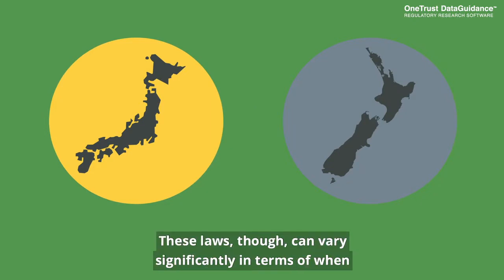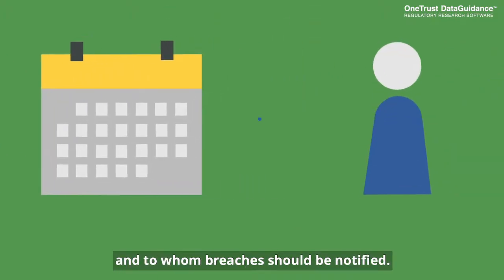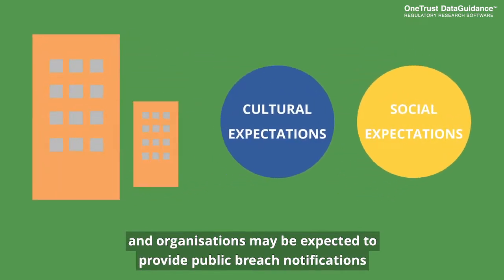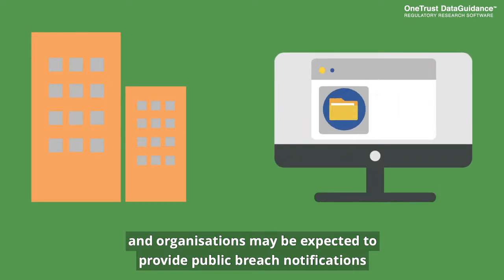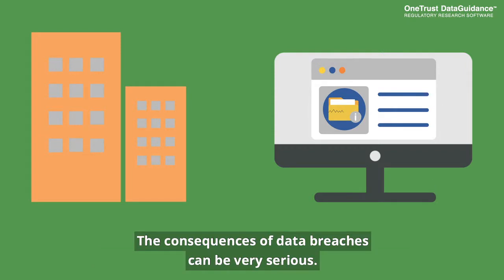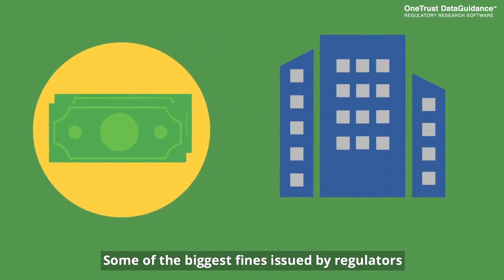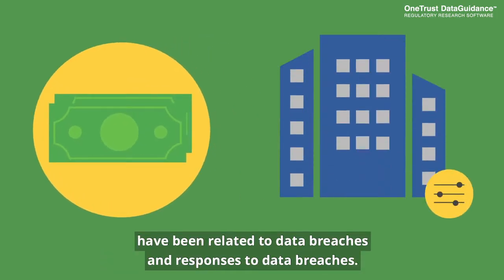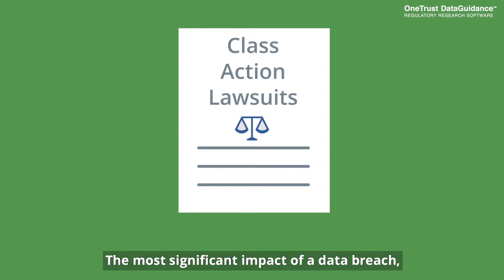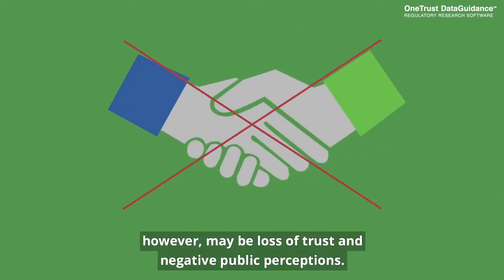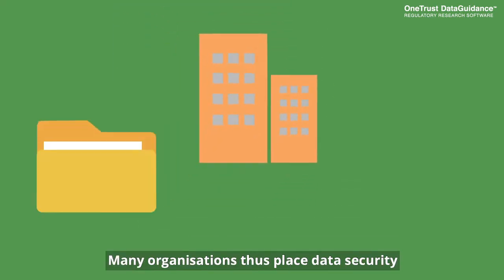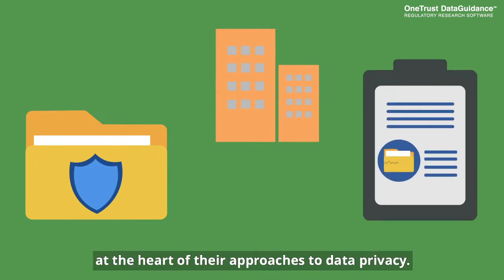These laws, though, can vary significantly in terms of when and to whom breaches should be notified. Cultural and social expectations can also play a role, and organizations may be expected to provide public breach notifications even when there is no legal obligation to do so. The consequences of data breaches can be very serious. Some of the biggest fines issued by regulators have been related to data breaches and responses to data breaches. There have also been class-action lawsuits following data breaches. The most significant impact of a data breach, however, may be the loss of trust and negative public perceptions. Many organizations thus place data security and data breach response plans at the heart of their approaches to data privacy.